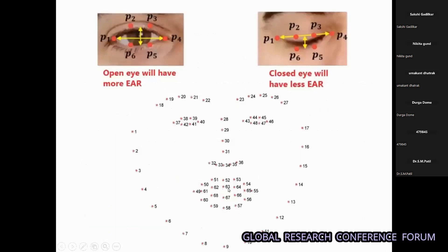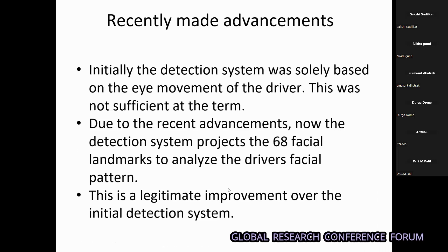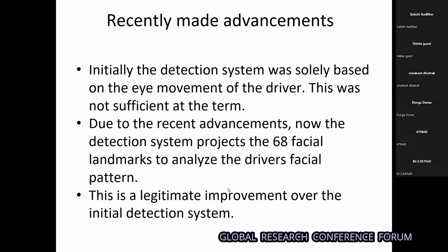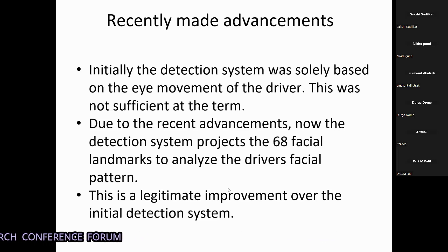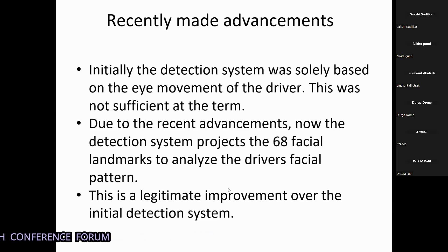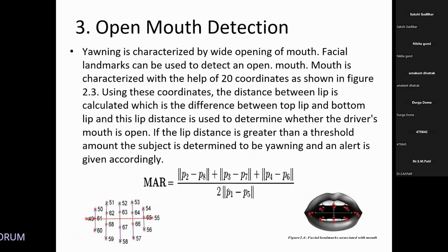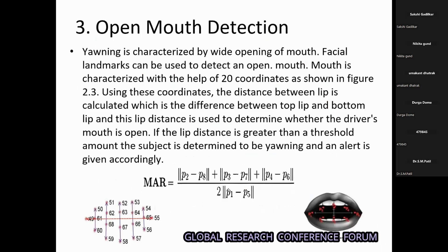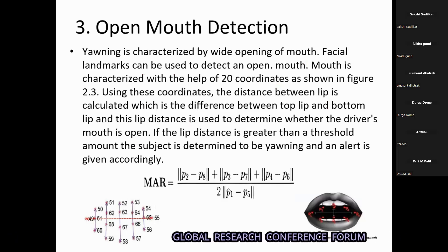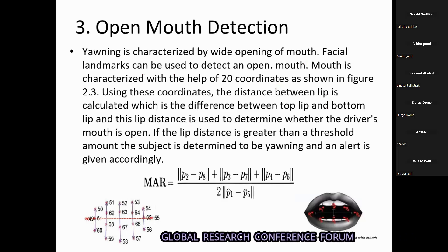Initially, the detection was solely based on the eye movement of the driver, which was not efficient enough to detect if the driver is drowsy. It could be affected by many factors such as low lighting conditions or the driver's face not being visible. So we have added a new feature that also calculates the Mouth Aspect Ratio. With that, we can determine if the driver is yawning while sleepy, and if the driver yawns two or three times in a set interval of time, we can determine the driver is drowsy and raise an alarm.